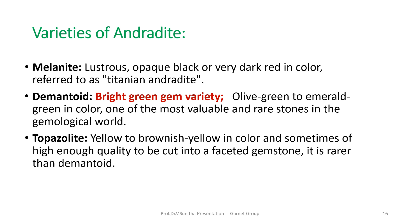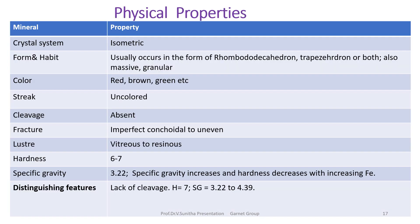Demantoid is a bright green gem variety and topazolite is yellow to brownish yellow in color. Coming to the overall physical properties: the crystal system is isometric; habit is usually rhombododecahedron or trapezohedron, or both; also massive and granular. Color is red, brown, or green; streak is uncolored; cleavage is absent; fracture is conchoidal to uneven; luster is vitreous; hardness is 6 to 7; and specific gravity is about 3.22, varying with different varieties. Distinguishing features include lack of cleavage, hardness around 7, and specific gravity ranging 3.22 to 4.3. Specific gravity increases and hardness decreases with increasing iron content.